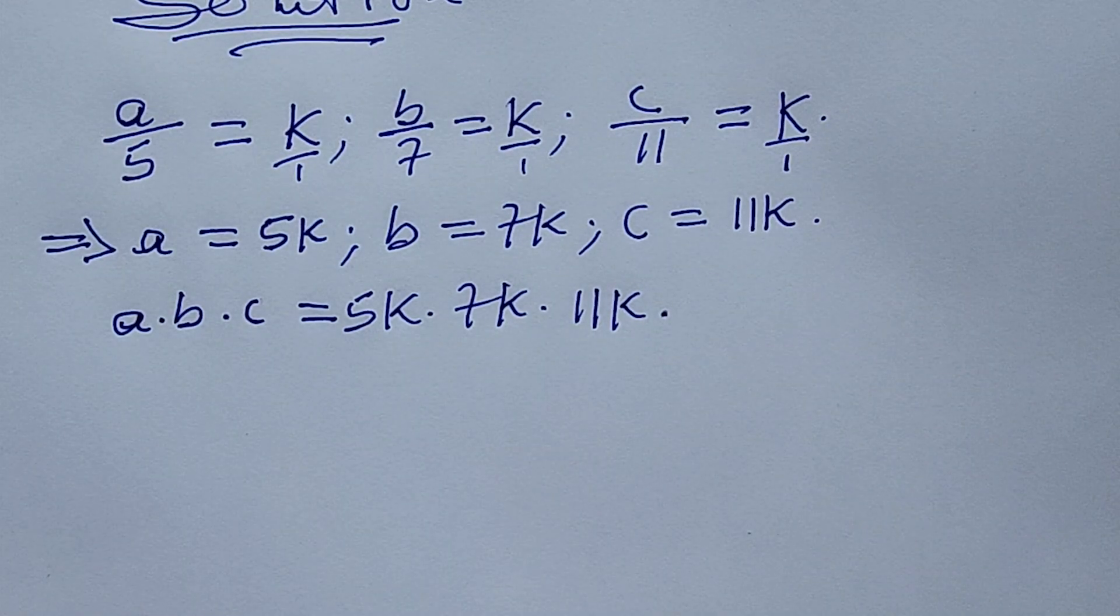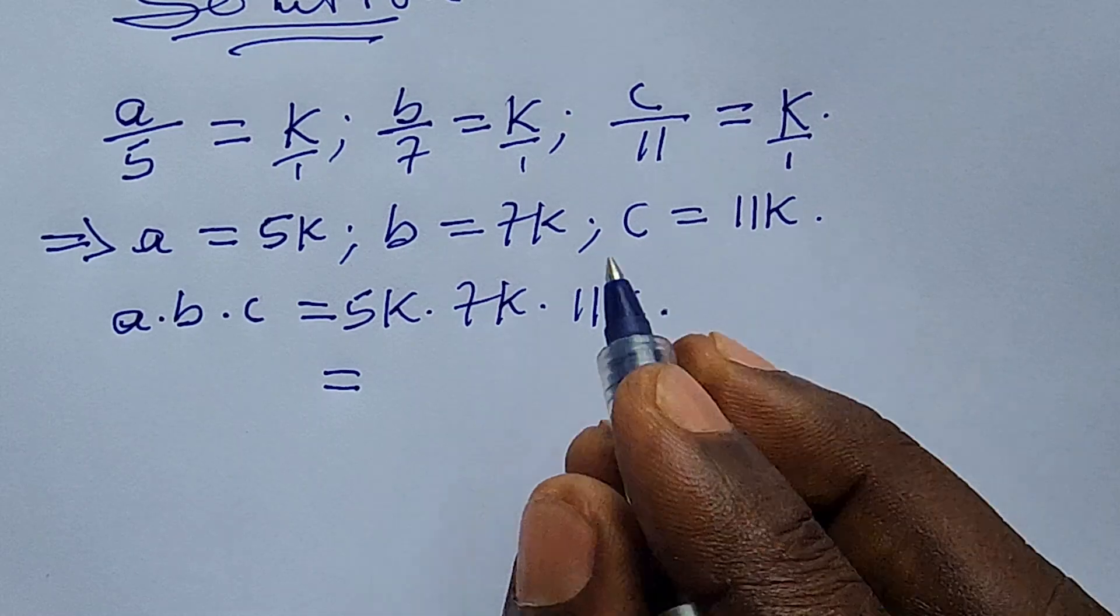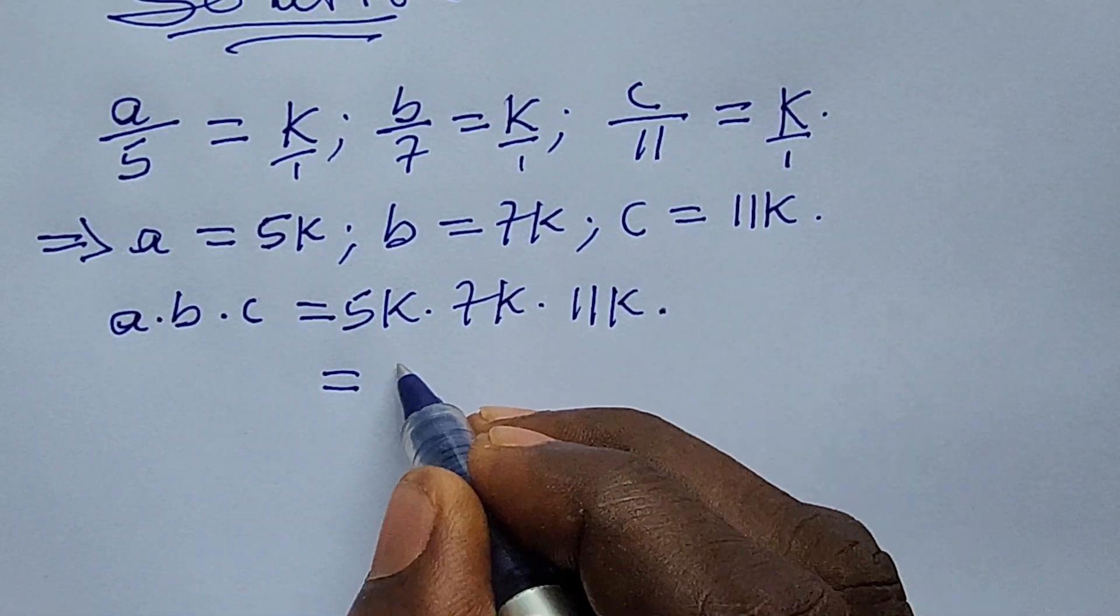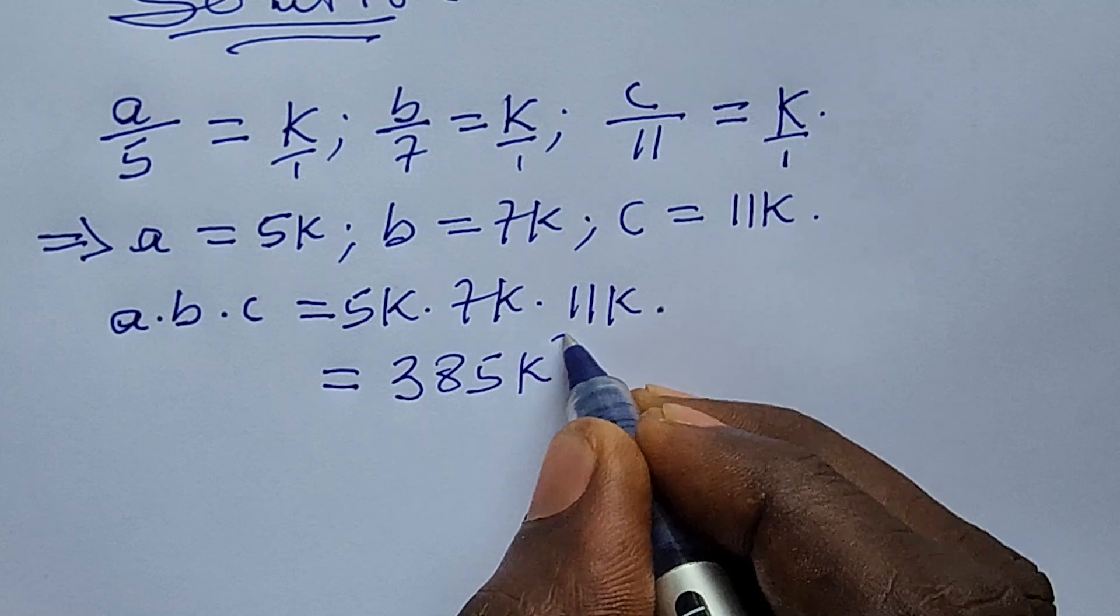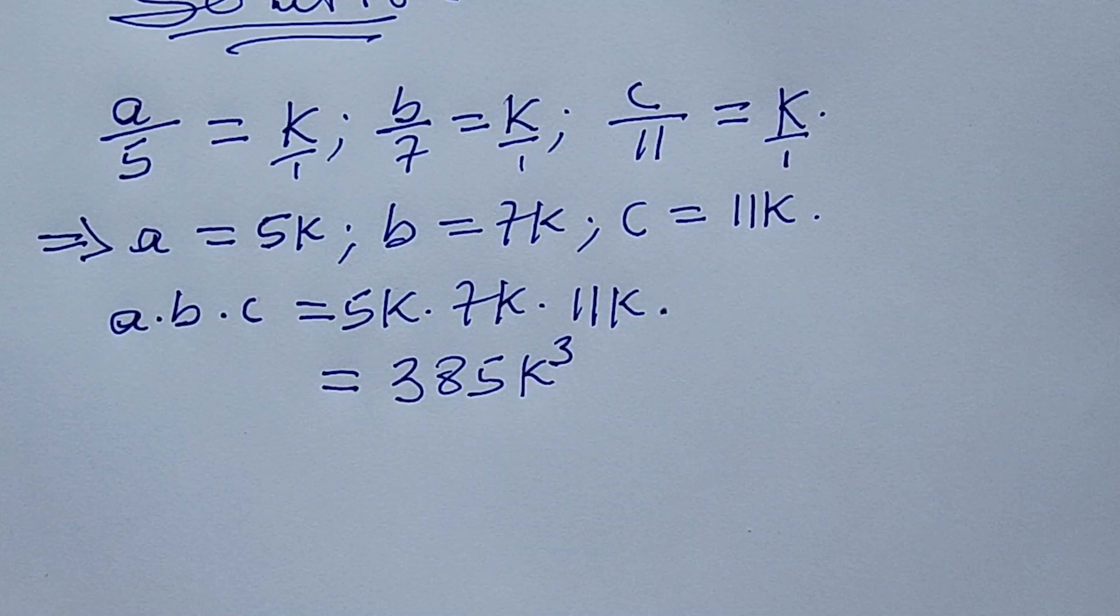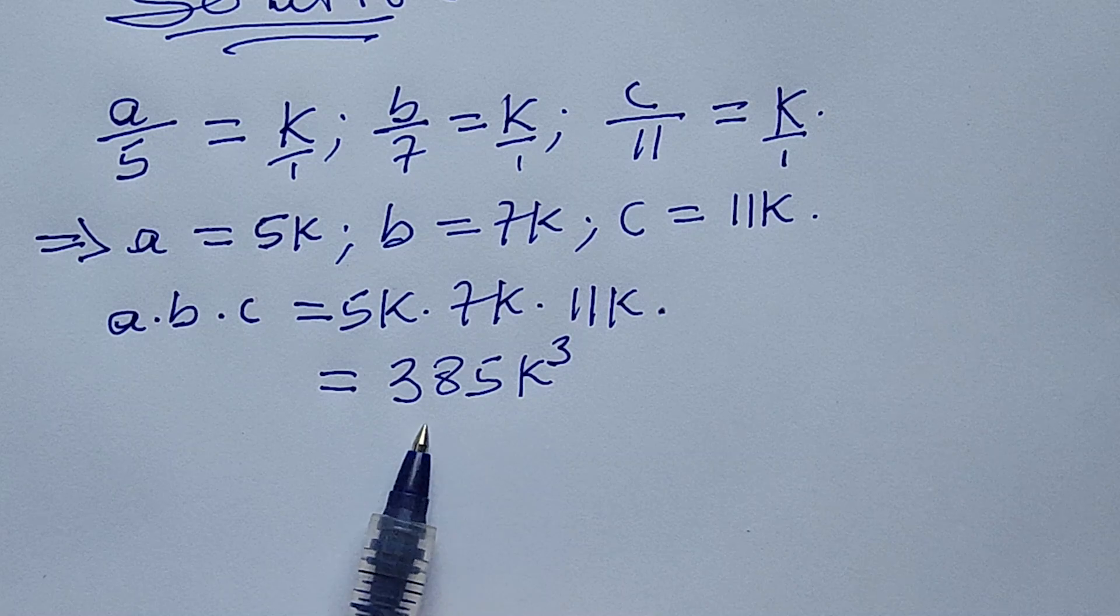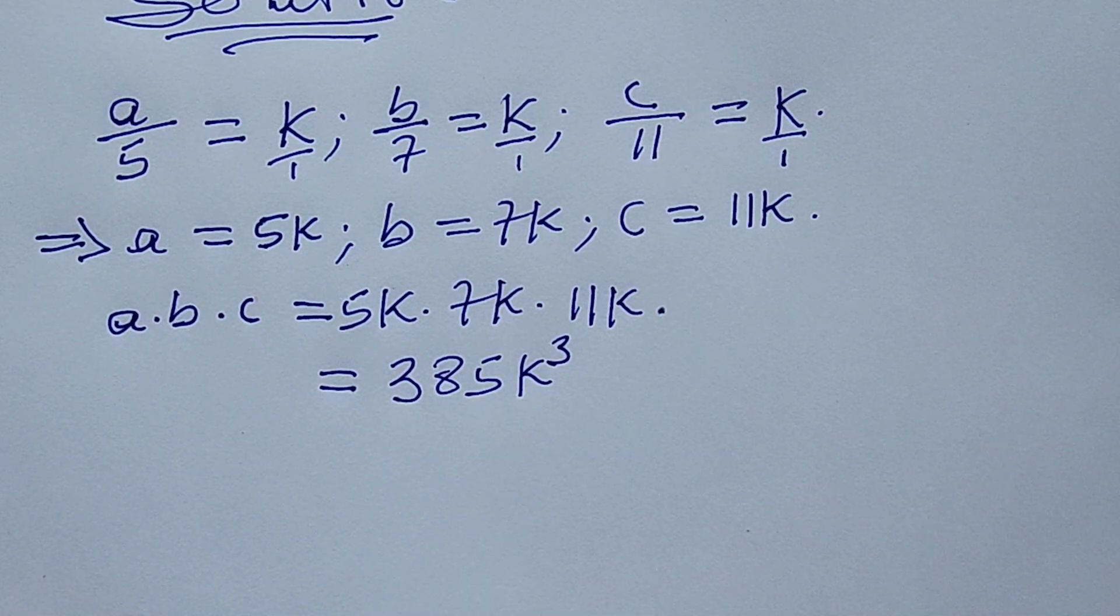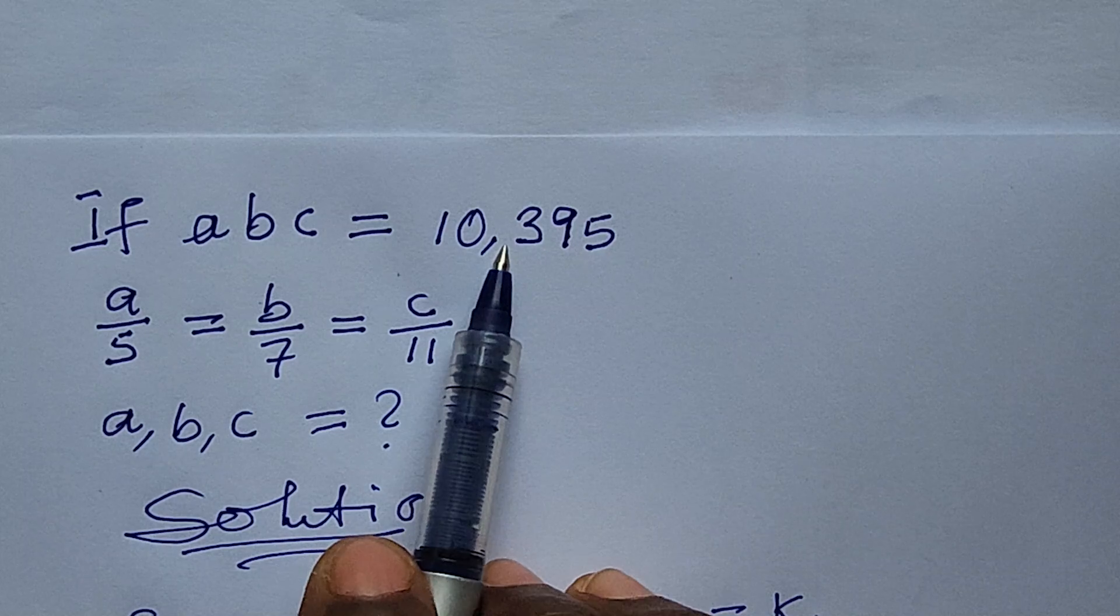So if we multiply all this together, this will in turn give us here 385k³. So we are now having our abc equal to this. But recall we are given abc from the question here from the beginning. So let's go and substitute into this.